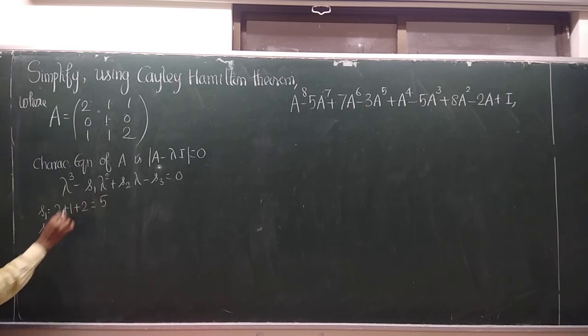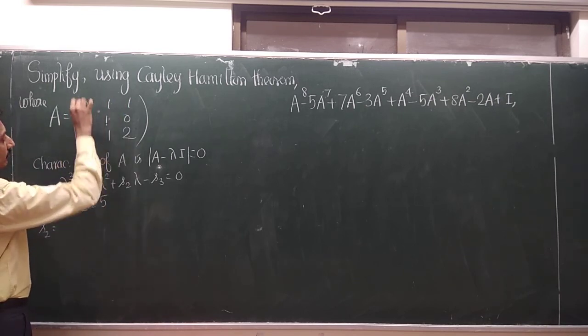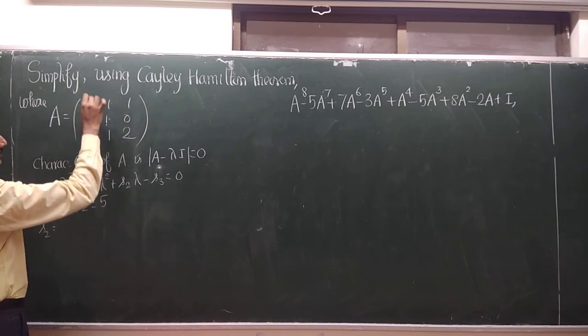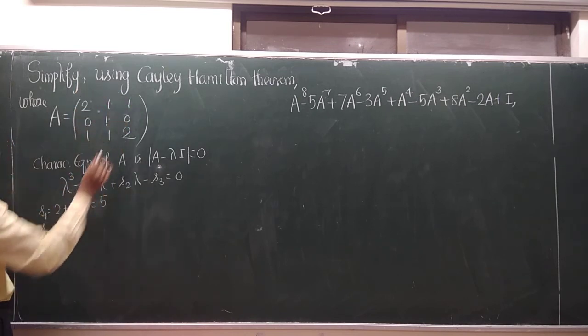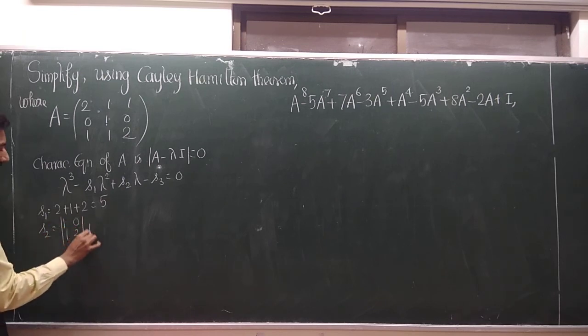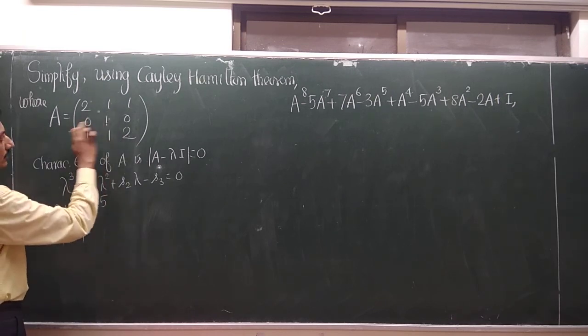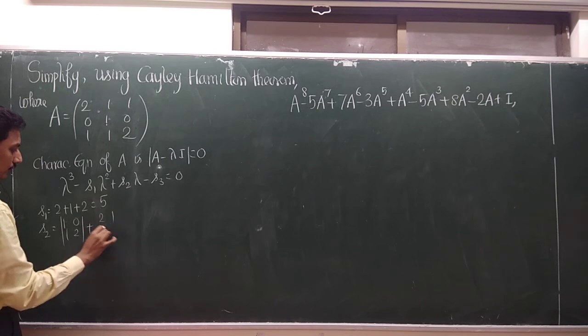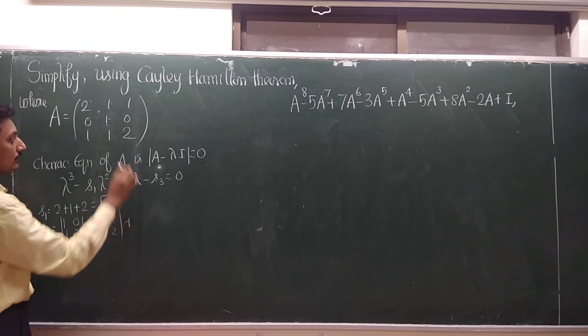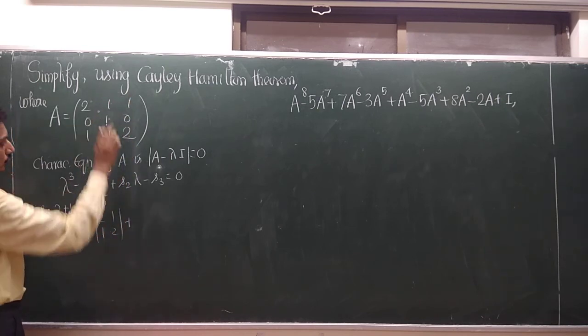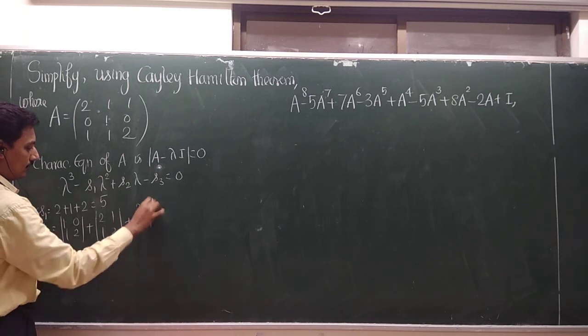What about S2? Sum of the minors of the diagonals. So first diagonal is this row, this column, so 1, 0, 1, 2. And second diagonal is this one, this column and this row, 2, 1, 1, 2. And the third diagonal is 2, this column and this row, 2, 1, 0, 1. So let us find out the values.